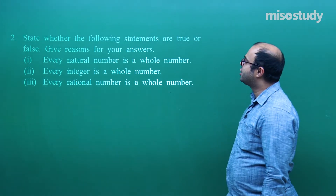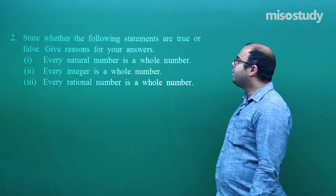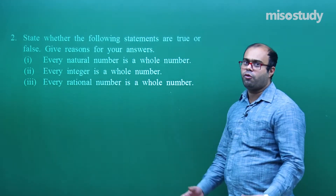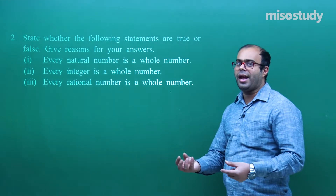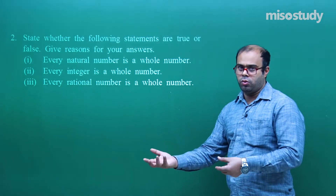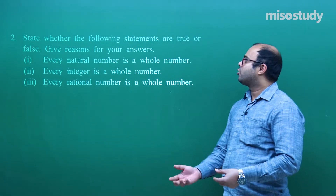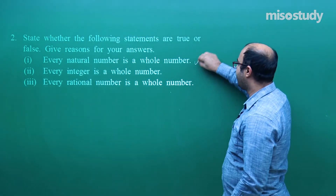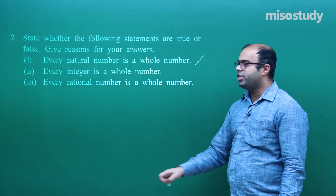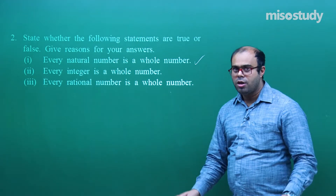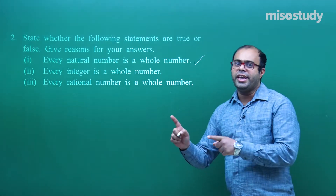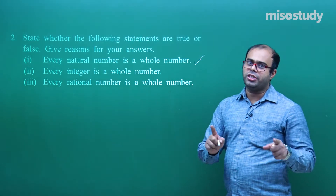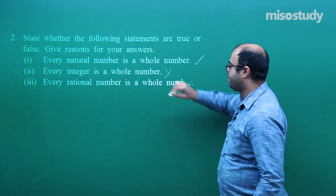State whether the following statements are true or false; give reasons for your answers. Every natural number is a whole number — of course, because whole numbers include all natural numbers plus 0, so every natural number is also a whole number; this is correct. Every integer is a whole number is not correct, because negative integers are not whole numbers. Whole numbers are only positive integers and 0, so this is a wrong statement.